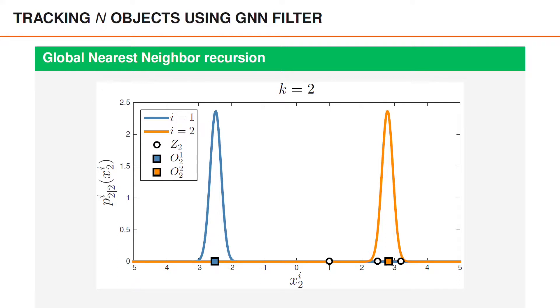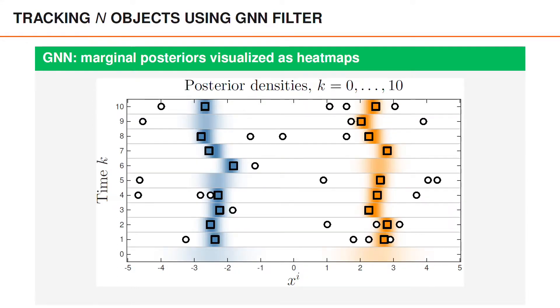In this figure, we have visualized the GNN posterior densities as heat maps. So for each discrete time step, higher color intensity corresponds to where more probability density is located. And where it is white, neither object has any significant probability density. The unassociated measurements are shown as white circles and the associated ones as colored squares.